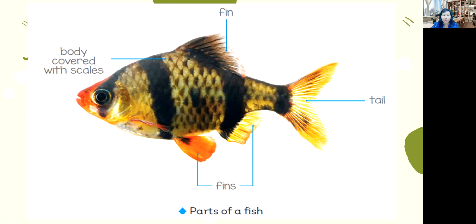Now let's look at the body parts of fish. Fish has its own body parts. Fish lives in water, so they have different body parts compared to mammals and reptiles. What are the body parts of fish?